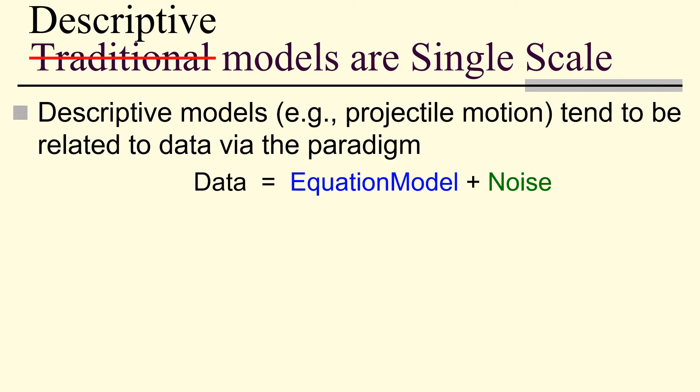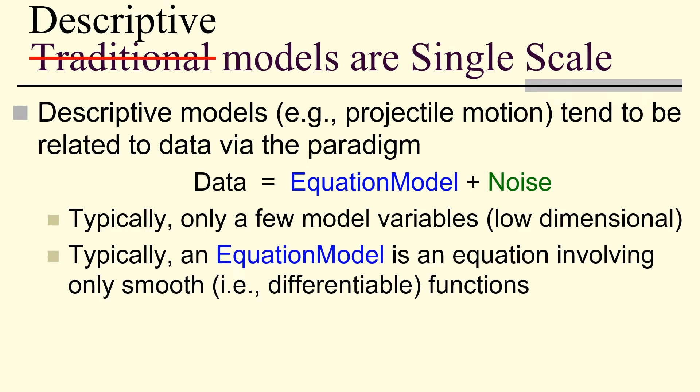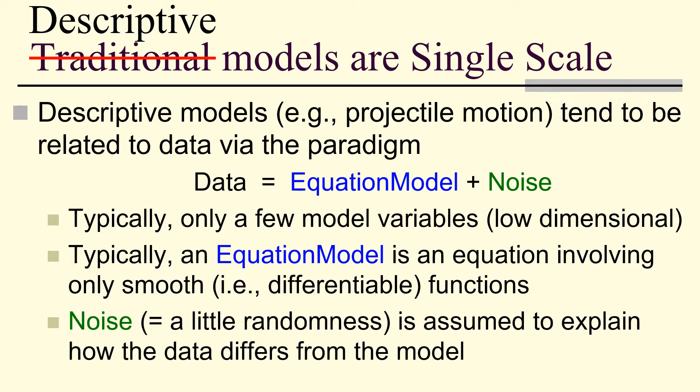And that's traditional is what we call descriptive models. Descriptive models tend to be an equation plus a variable modeling the noise. Typically, there's only a few model variables. And an equation model is just that. It's an equation. It tends to only involve smooth, differentiable functions. Noise is assumed to explain how the data differs from the model.